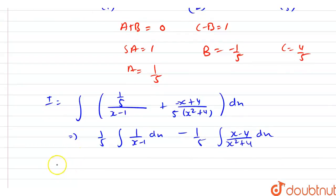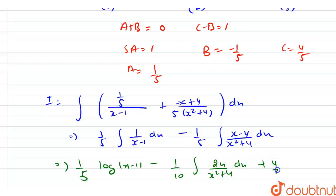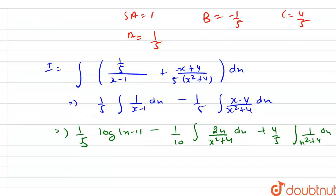Evaluating further: (1/5) log|x minus 1| minus (1/10) times the integration of 2x/(x squared plus 4) dx plus (4/5) times the integration of 1/(x squared plus 4) dx.